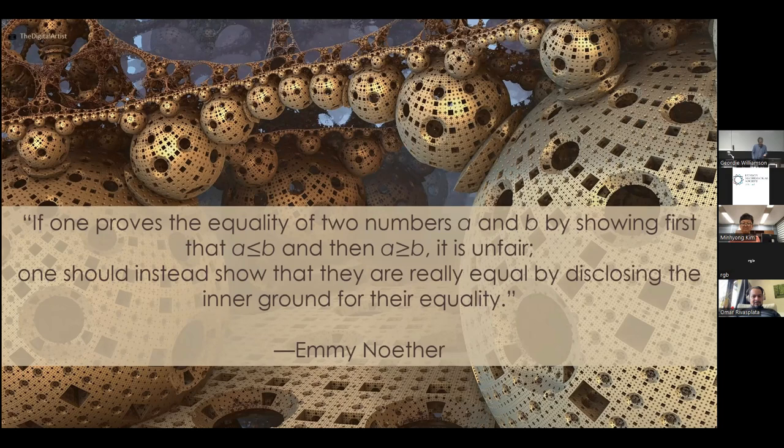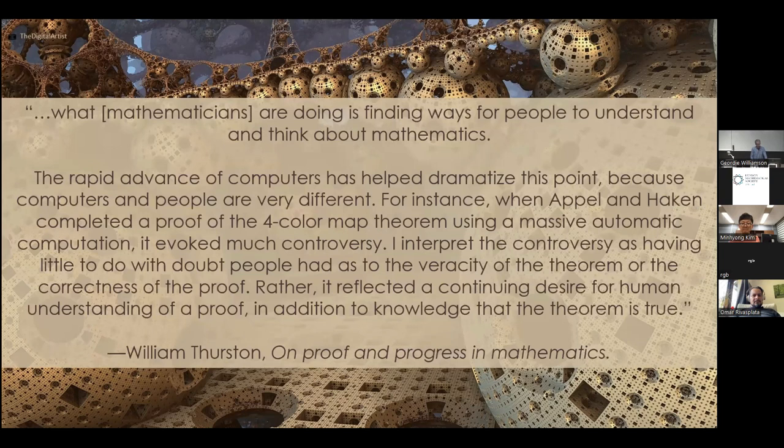So this is from the article that I was discussing earlier. This is William Thurston, Bill Thurston, from this famous article on proof and progress in mathematics. What mathematicians are doing is finding ways for people to understand and think about mathematics. The rapid advance of computers has helped dramatize this point because computers and people are very different. For instance, when Appel and Haken completed a proof of the four color map theorem using a massive automatic computation, it evoked much controversy. I interpret the controversy as having little to do with doubt people had as to the veracity of the theorem or correctness of the proof. Rather, it reflected a continuing desire for human understanding of a proof in addition to knowledge that the theorem is true.